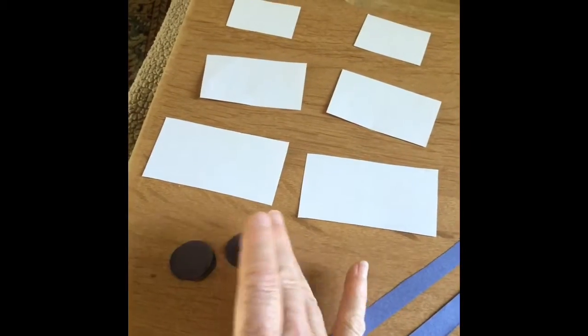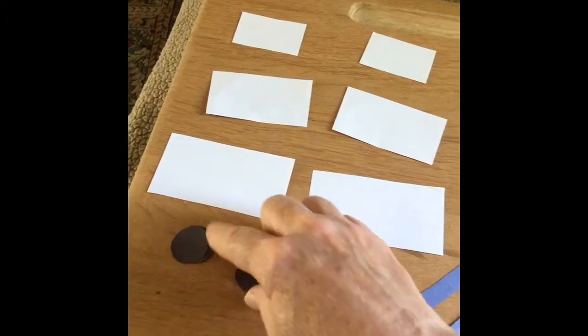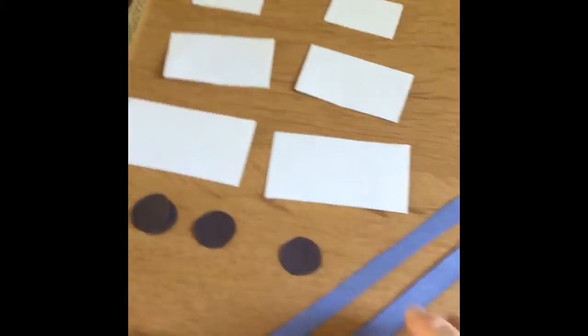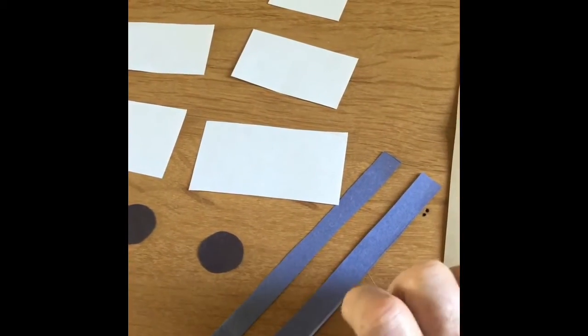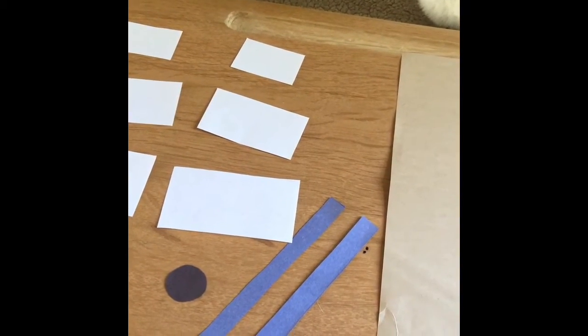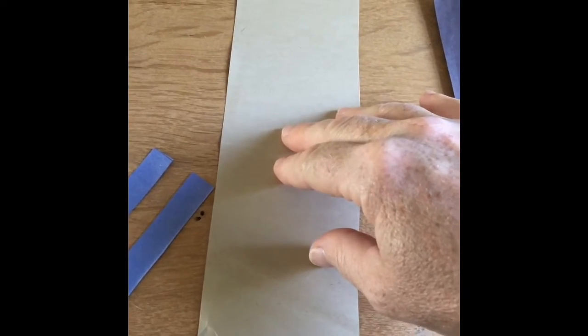You will need four black circles. These are going to be your portholes and two long blue rectangles which will be our masts. And then we'll need a brown rectangle that'll be the body of the ship.